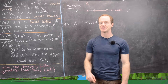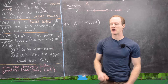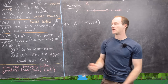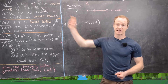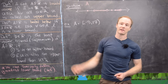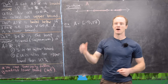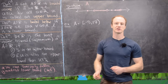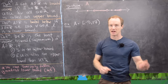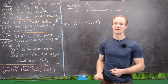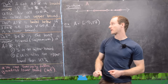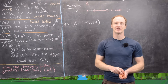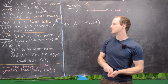Obviously not every set will have an upper bound. The real numbers don't have an upper bound because they go on infinitely large. And the subset of the integers inside the real numbers also does not have an upper bound, because integers get arbitrarily large.